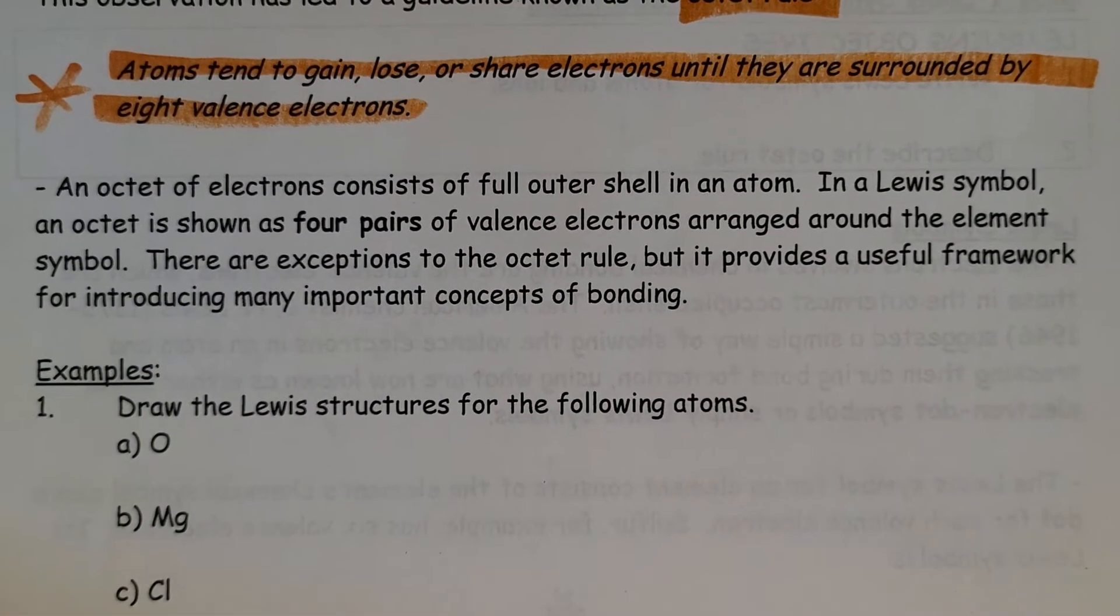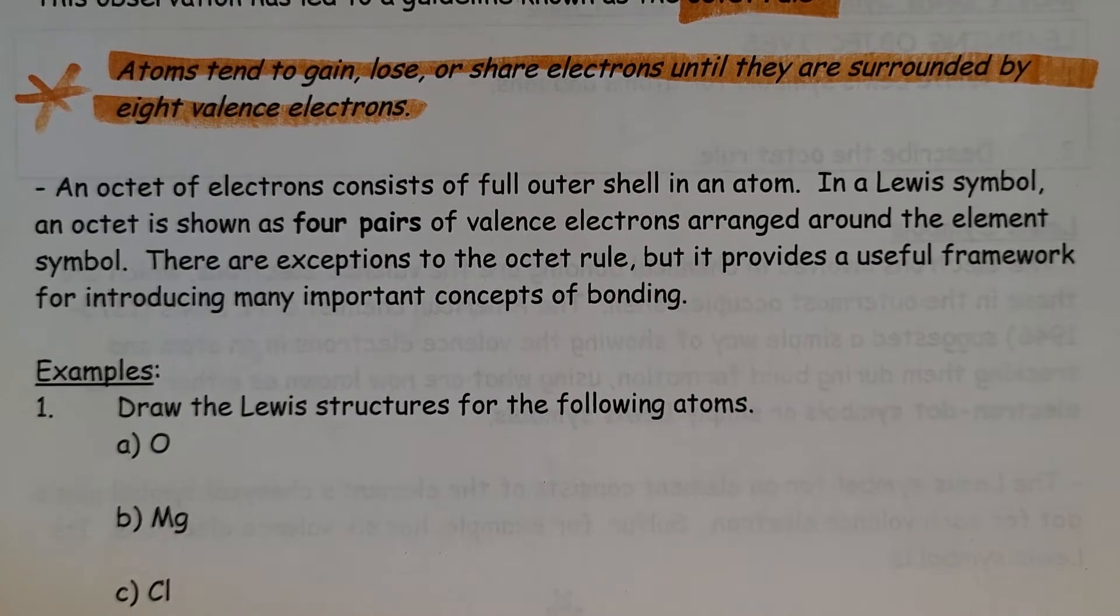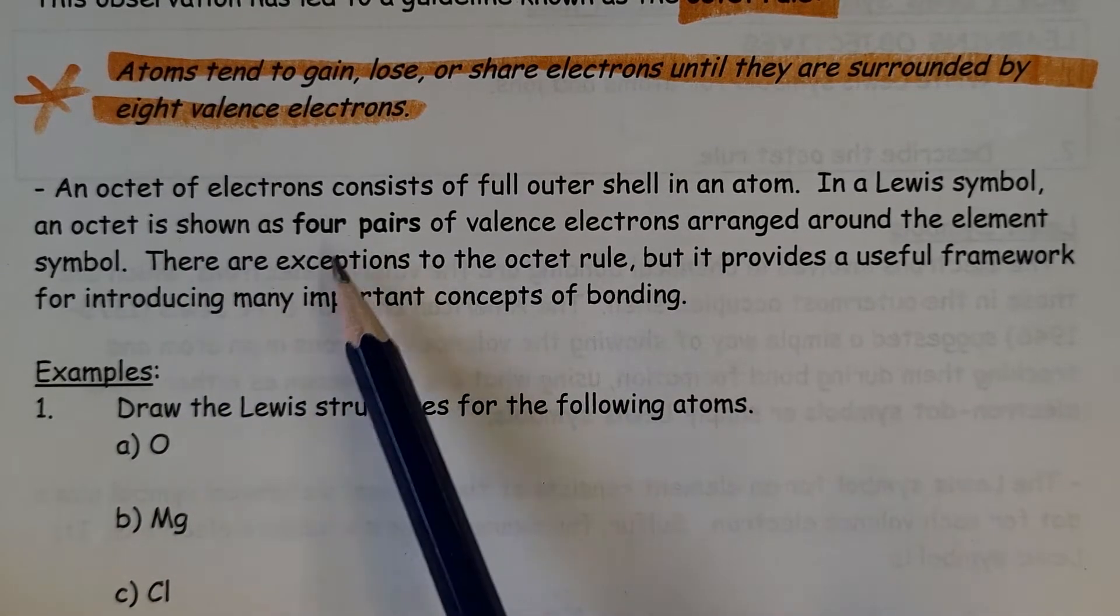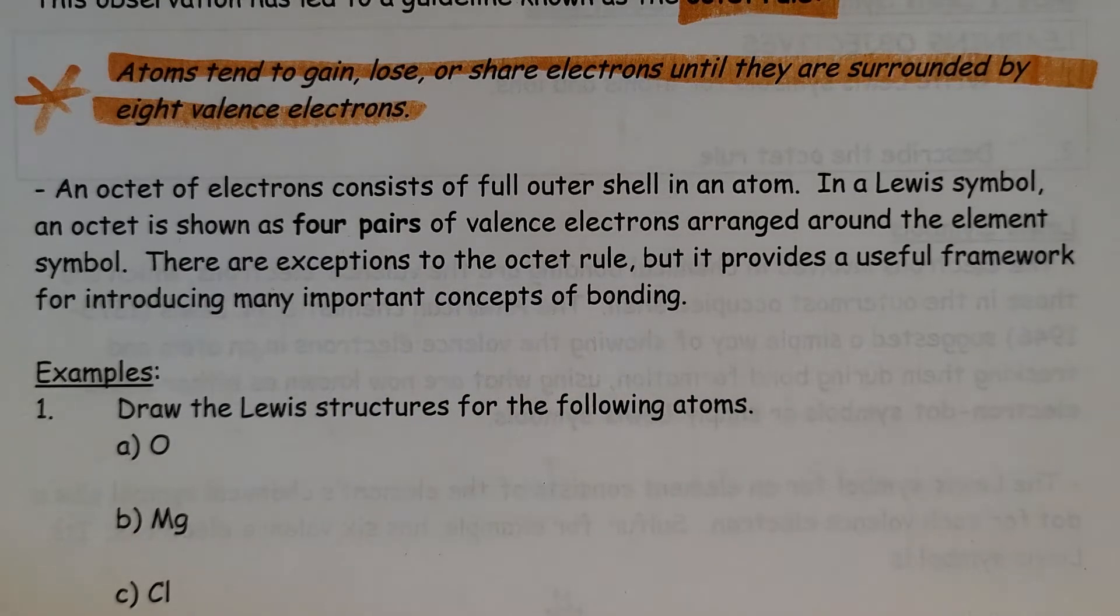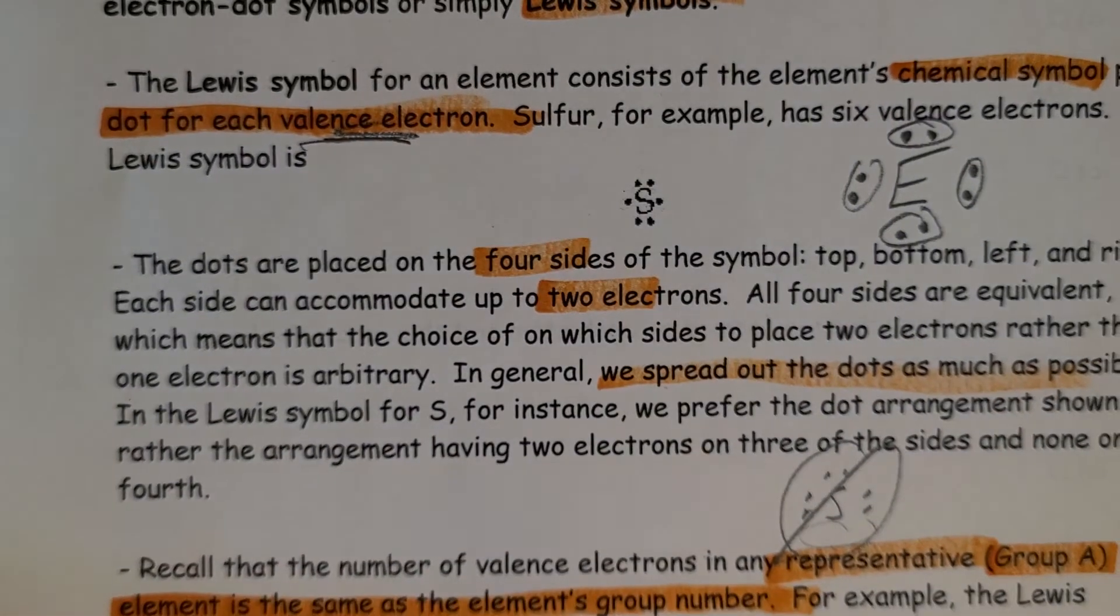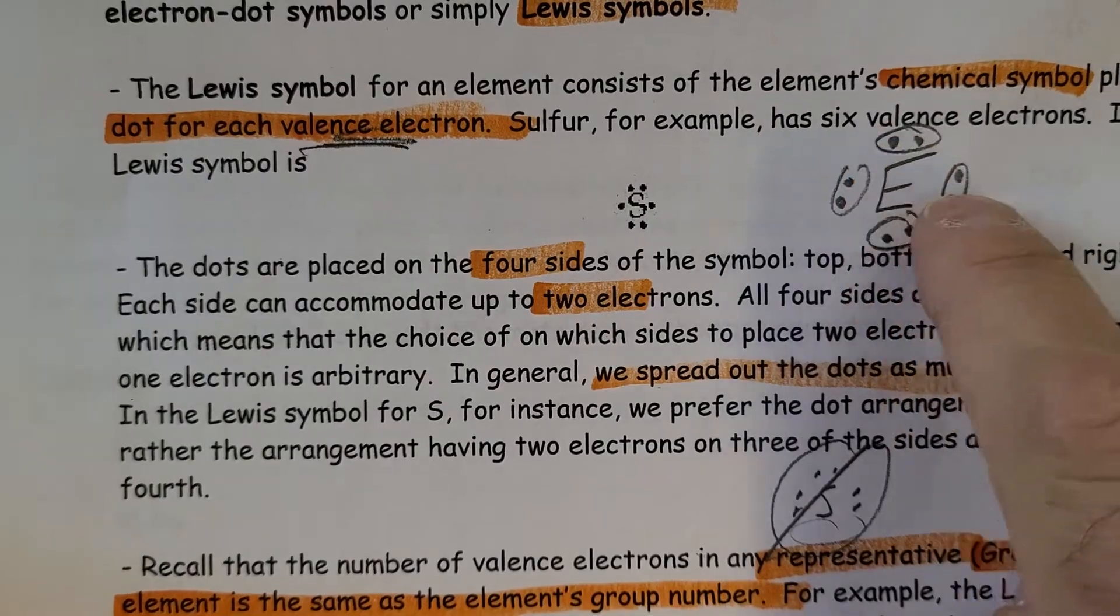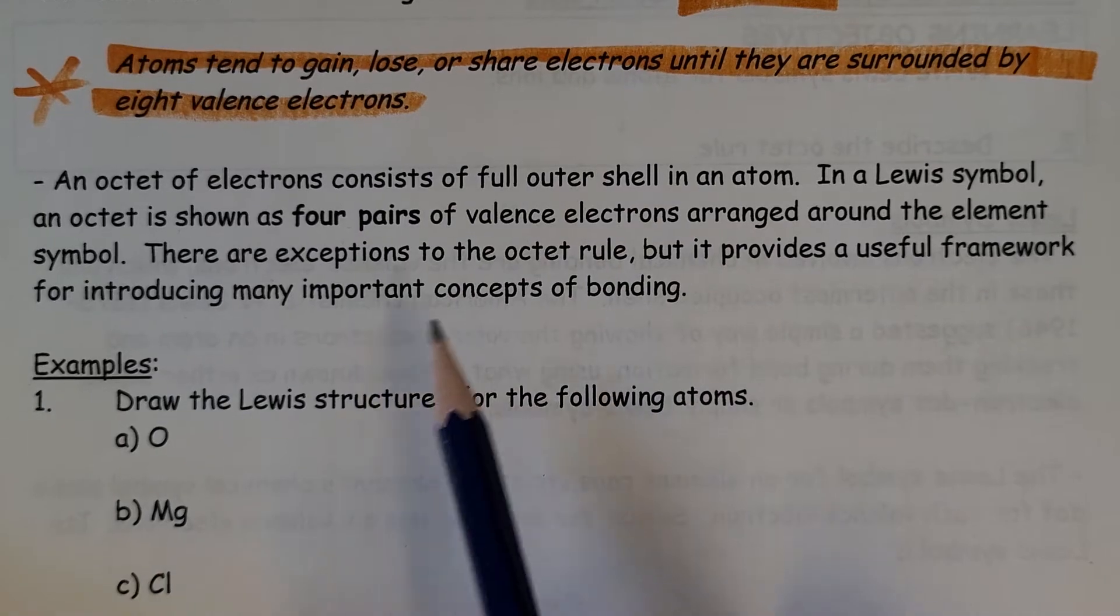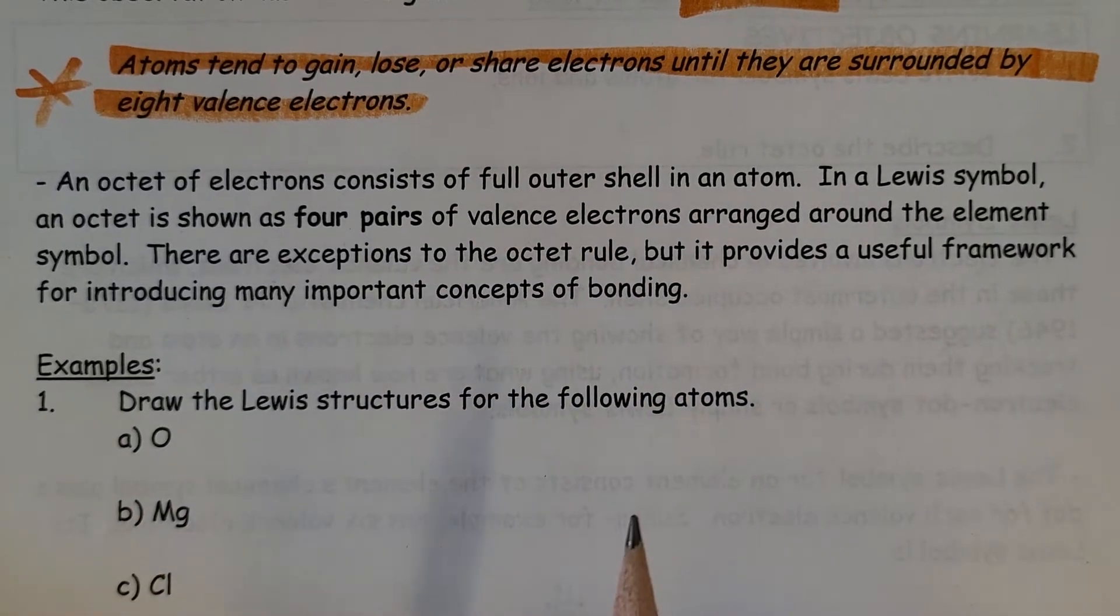An octet of electrons consists of a full outer shell in an atom. In a Lewis symbol, an octet would be listed as four pairs, as we saw over here. If I had some element with one, two, three, four pairs of electrons, it would be considered full.